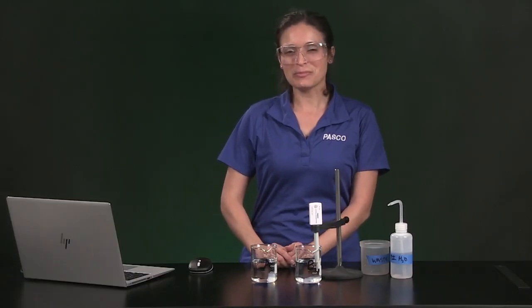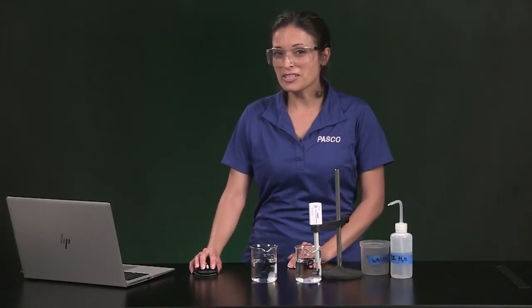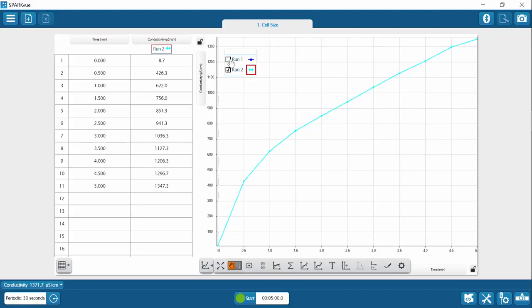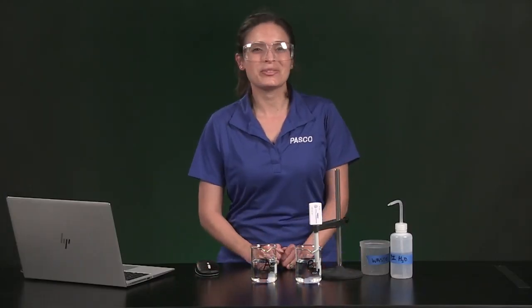You can use the coordinate tool in SparkView to see what the initial and final conductivity values were. When I turn on the tool, I can move the gray box and set it to whatever data point I want and I can remove it by clicking the X. You can make run visible again by checking the box in the legend. Make sure you move the red box in the legend to the run you want to analyze. You now have enough information to complete the analysis and answer the questions.